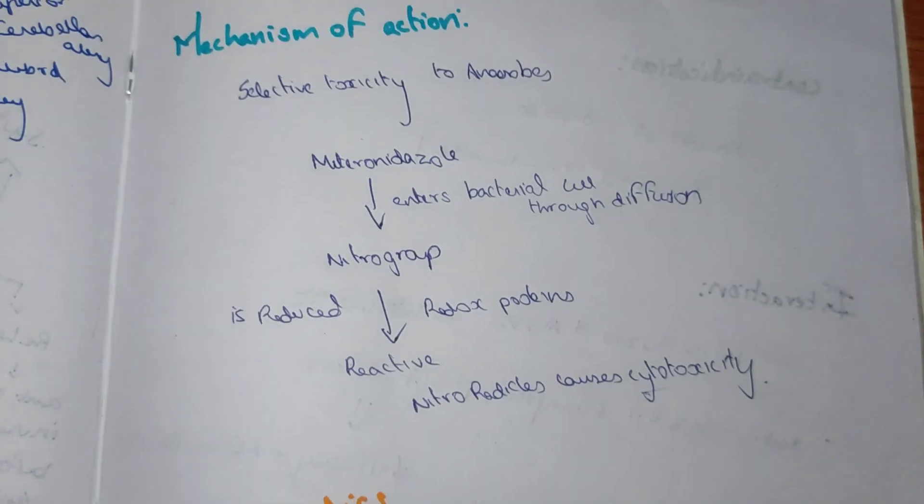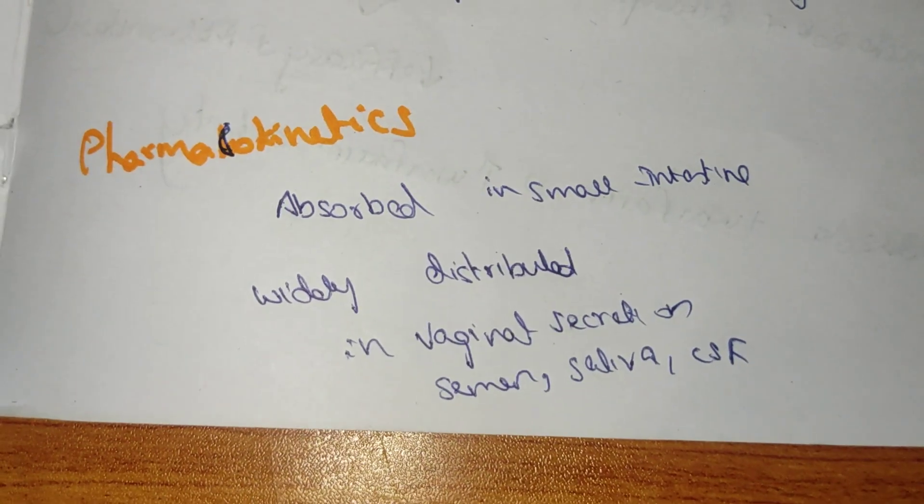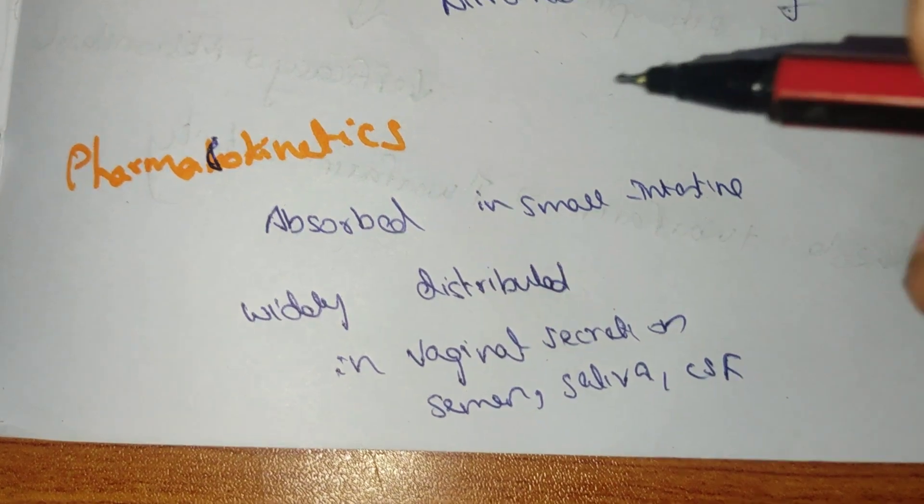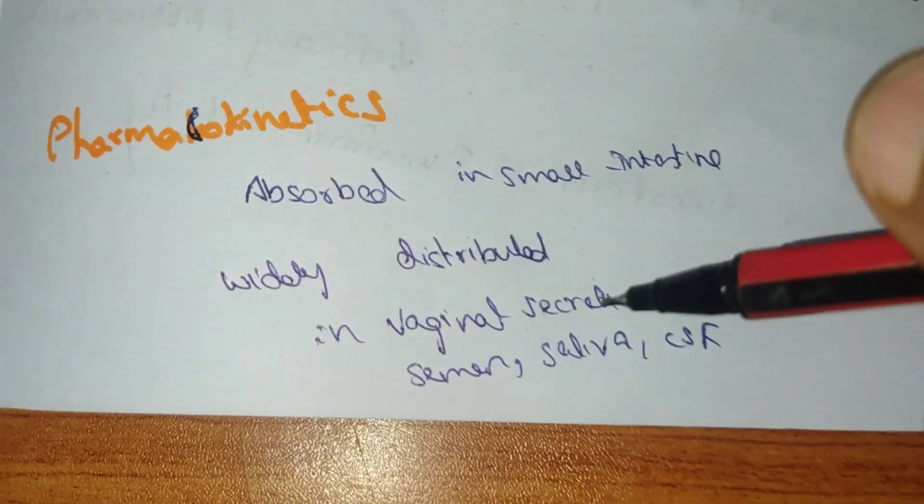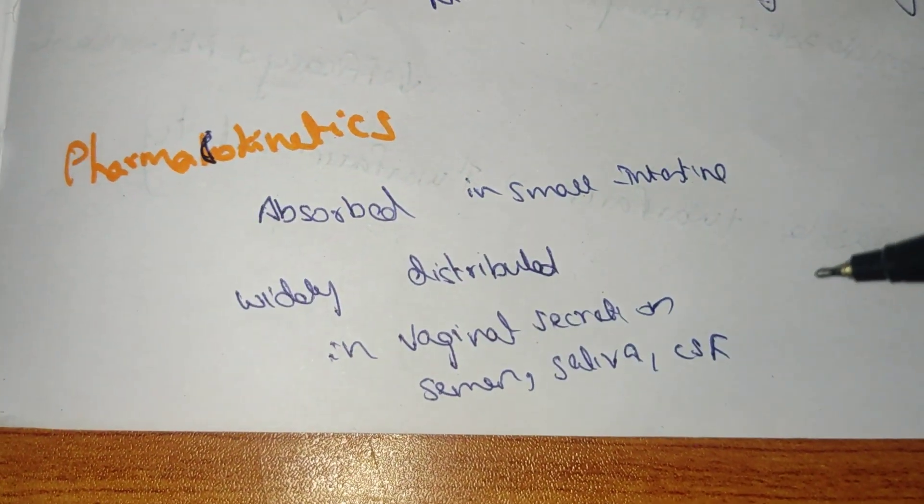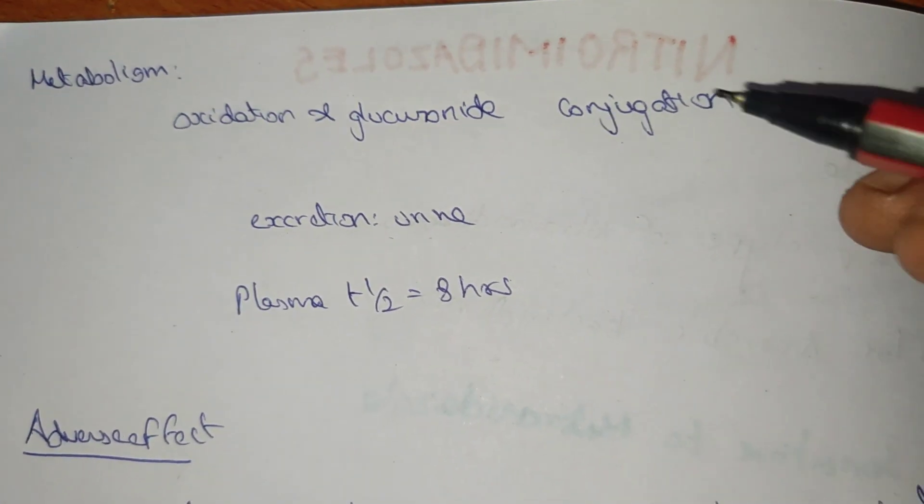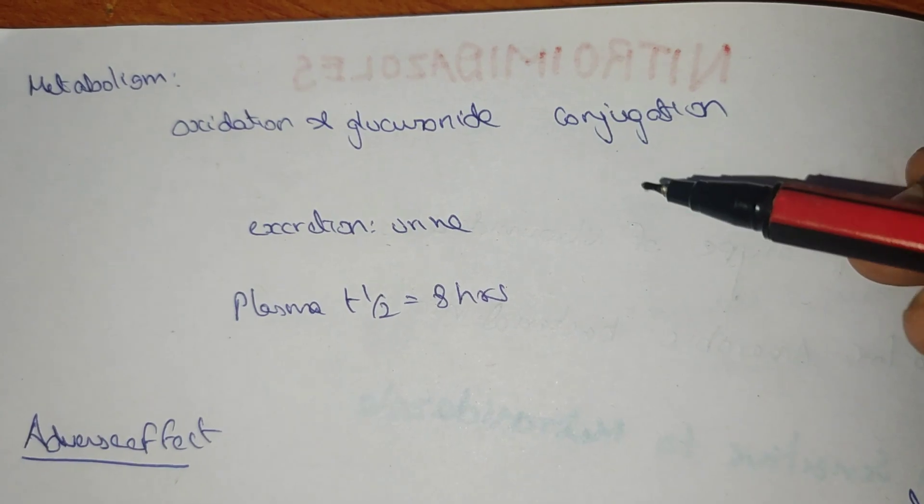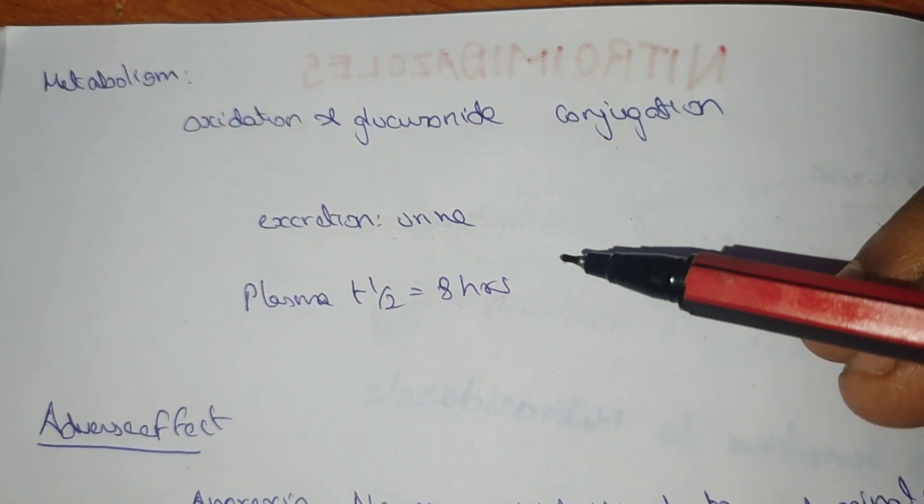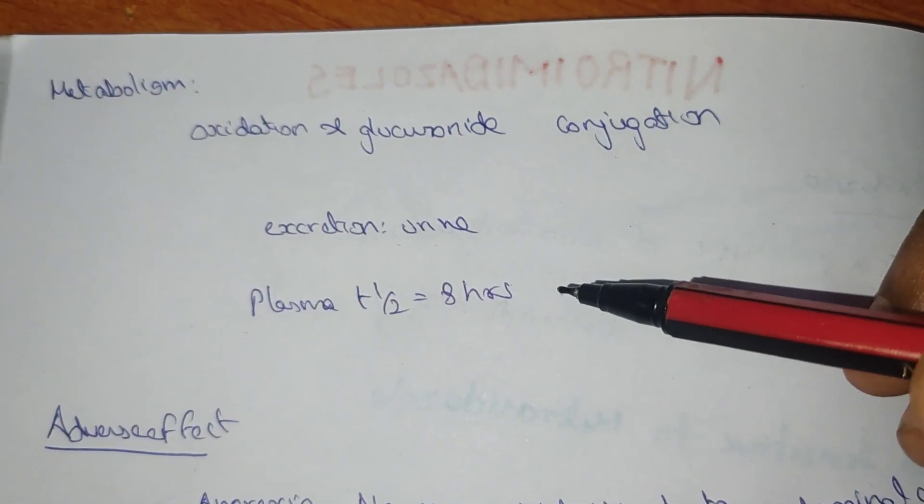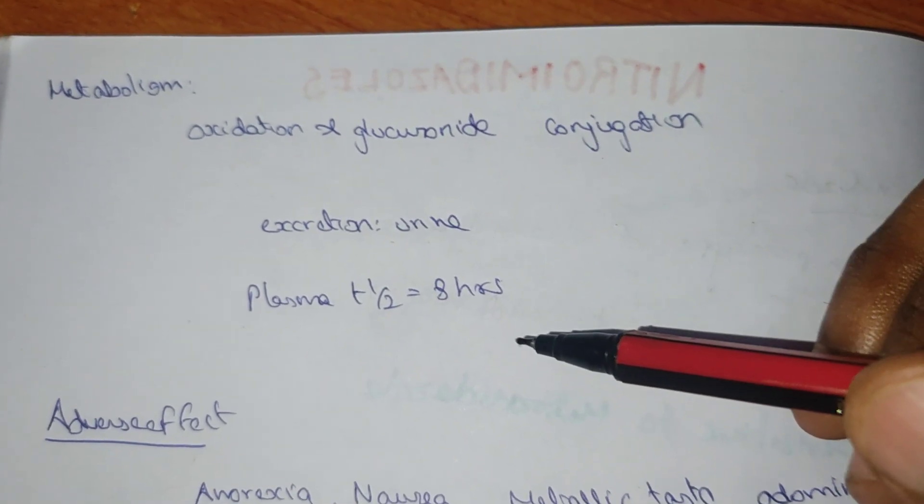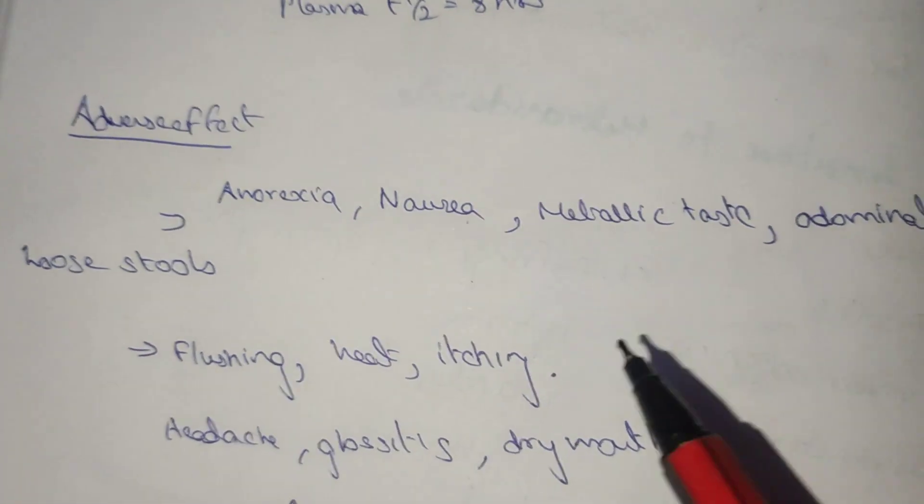Pharmacokinetics: absorbed in small intestine, widely distributed in vaginal secretion, semen, saliva, and CSF. The metabolism is oxidation and glucuronide conjugation. Excretion is through urine and the half-life period is eight hours.